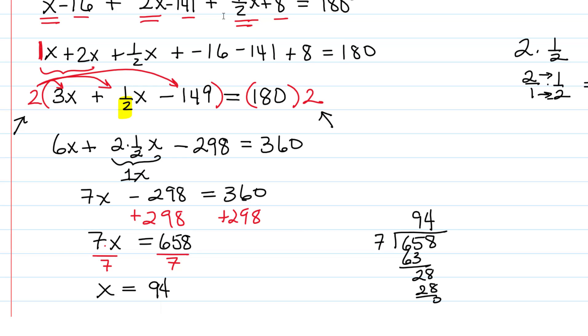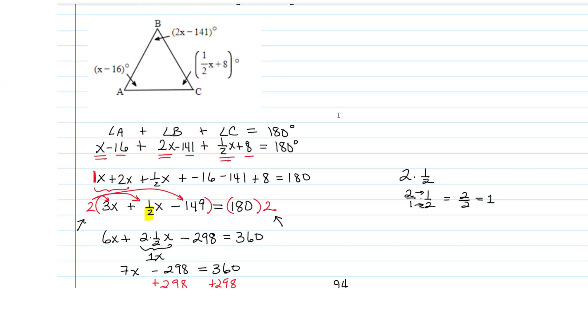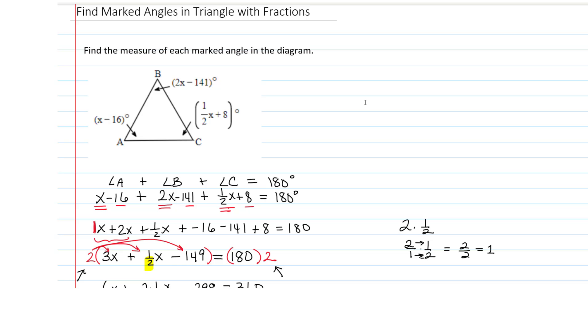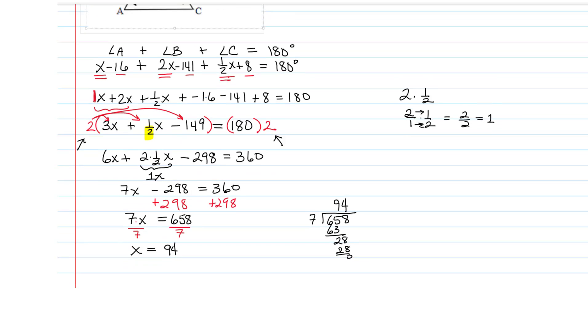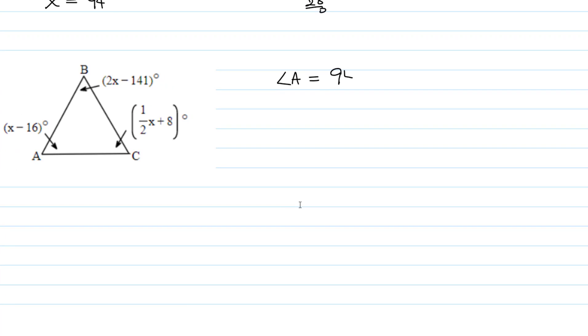Now we're almost done, not quite, because we were not asked to find x. We were asked to find the measure of each marked angle. So now we're going to have to take the value that we found for x and plug it in. So angle A is going to be 94 minus 16, which is going to be 78 degrees. Angle B is going to be 2 times 94 minus 141. That's going to be 188 minus 141, which is 47 degrees.